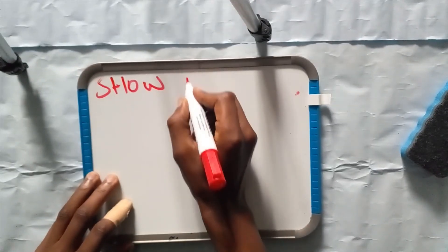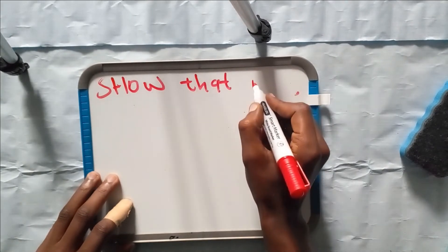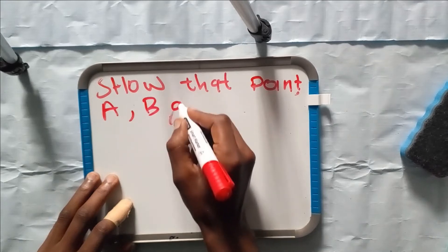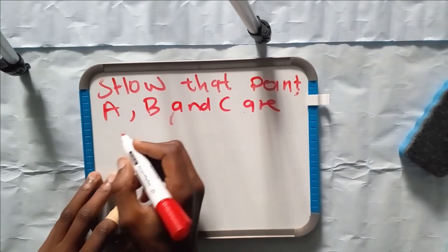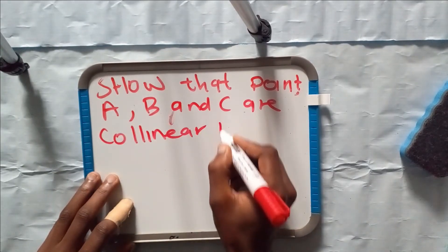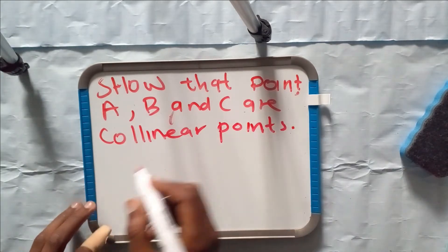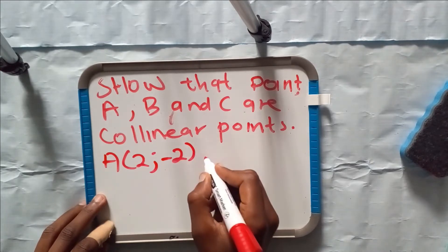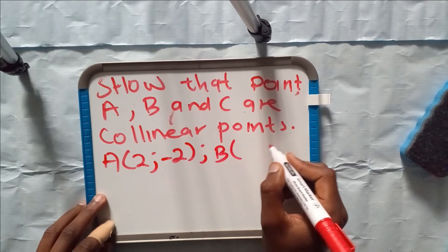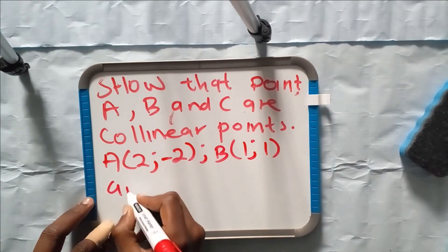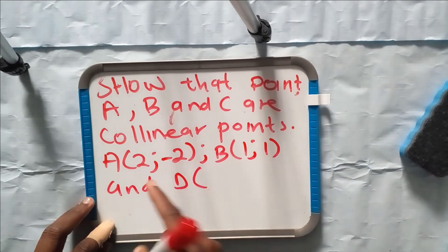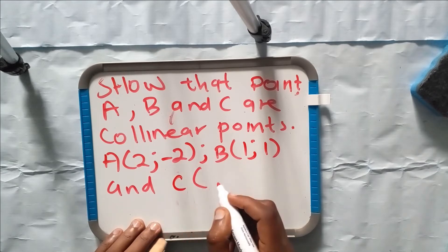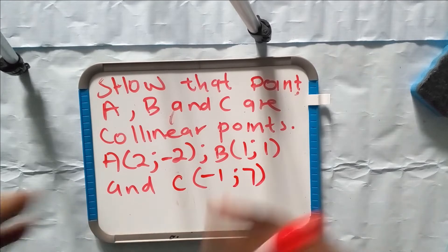Show that points A, B, and C are collinear. We have point A which is (2, -2), point B which is (1, 1), and point C which is (-1, 7).